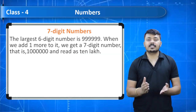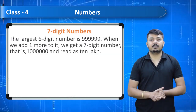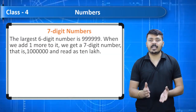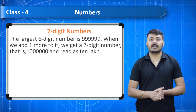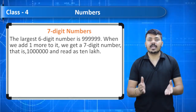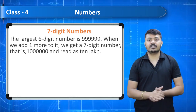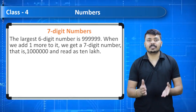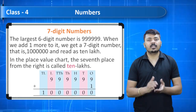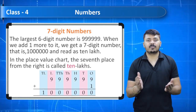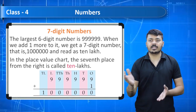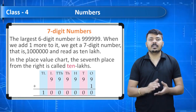Seven-digit numbers: the largest six-digit number is 9,99,999. When we add one more to it we get a seven-digit number — 10,00,000, read as 10 lakh. In the place value chart, the seventh place from the right is called 10 lakhs.